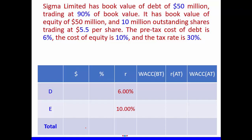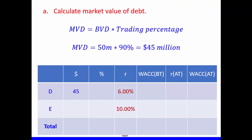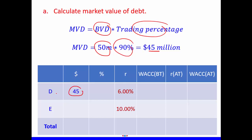Let's get the values we have. The before-tax cost of debt is 6% and the cost of equity is 10%. To calculate market value of debt, we take book value of debt multiplied by the trading percentage: $50 million times 90% gives us $45 million. In our table, we put $45 million for debt — remember, this refers to market value, not book value.